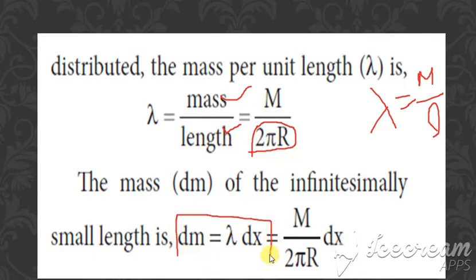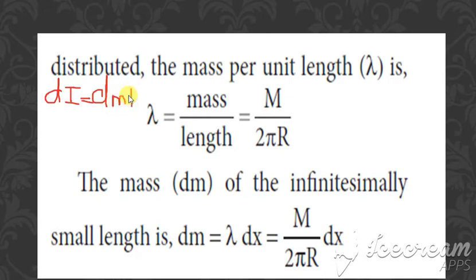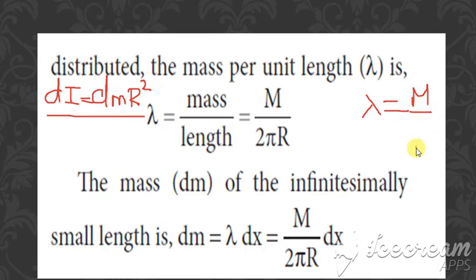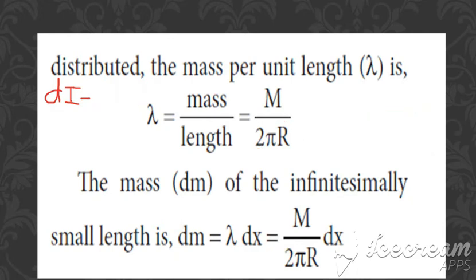The third formula is dm = lambda·dx. Here lambda = M / (2πR), same as M divided by L. Now we substitute the value of dm into the first formula to get the value of I.